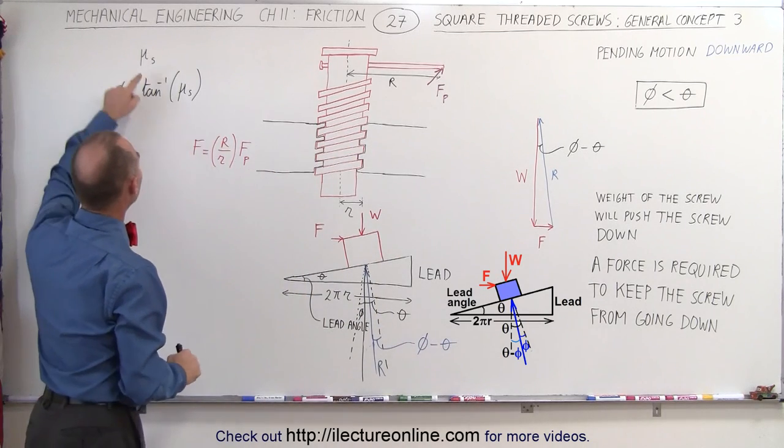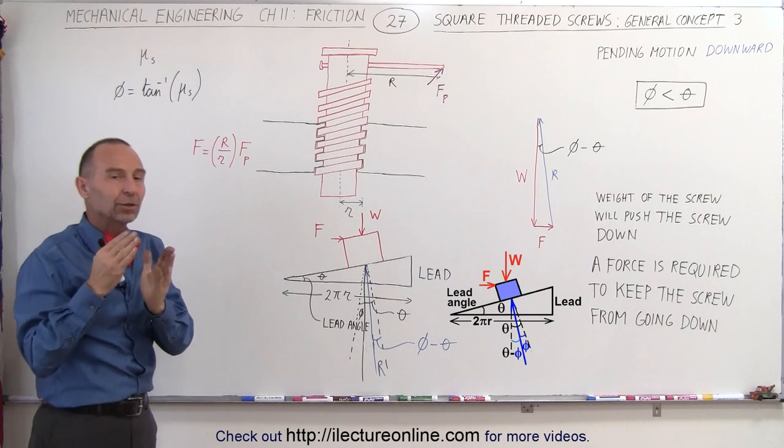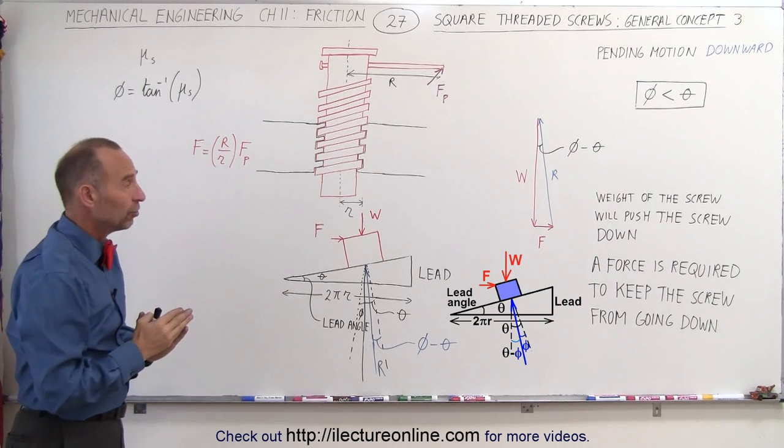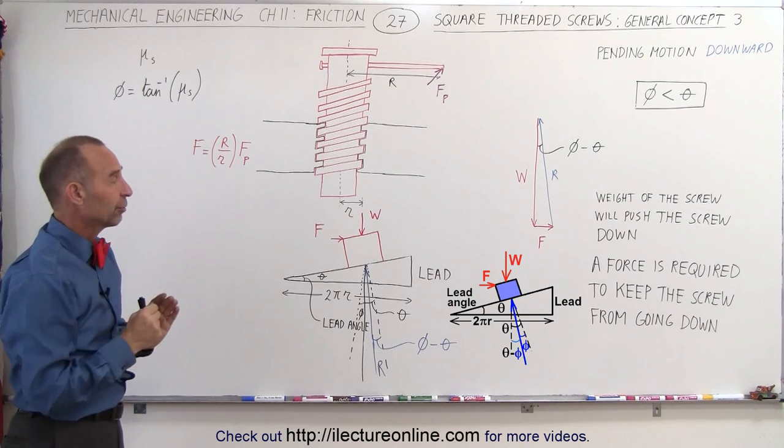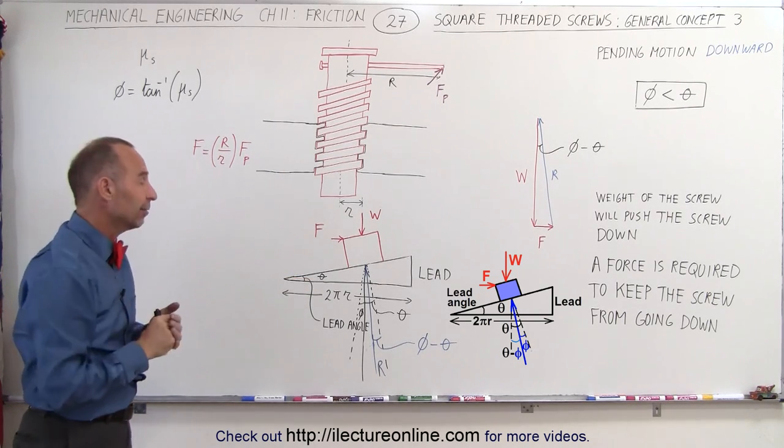The angle phi is the angle calculated from the coefficient of friction, which is the angle between the normal and what we call the reactionary force, and theta is the lead angle of the thread itself.